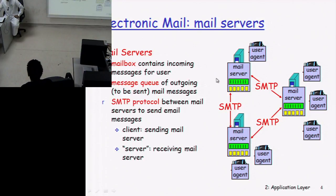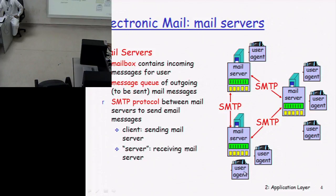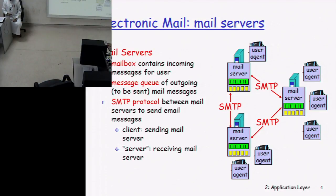The sending mail server becomes the client and the recipient's mail server becomes the server that receives the email, which is then placed into the user's mailbox. When that user comes online, they hook up with their mail server and use POP3 or IMAP protocol — a different protocol from SMTP — to retrieve and download their email from their mailbox into their mail reader or user agent.